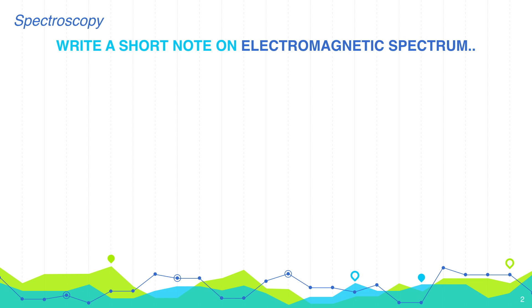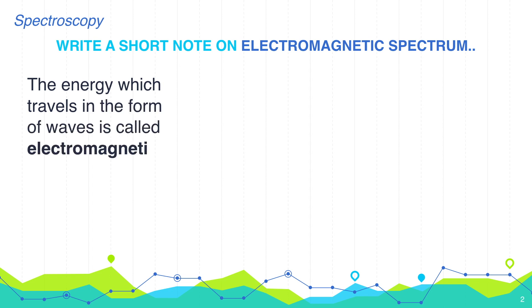So first of all, let's give the definition of electromagnetic radiation. The energy which travels in the form of wave is called as electromagnetic radiation.